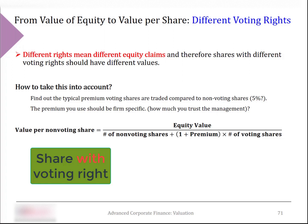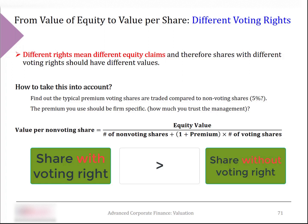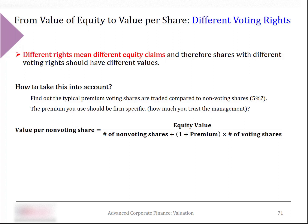If all share classes have the same value, we can simply divide equity value by the sum of all shares to estimate value per share. However, common sense tells us that a share with voting rights should have a higher value than an identical share without voting rights. On average, voting shares are traded at a premium. The premium depends strongly on how much investors trust management — if investors trust management, they may not value their voting rights much and may not be willing to pay a large premium, causing the voting premium to approach zero.